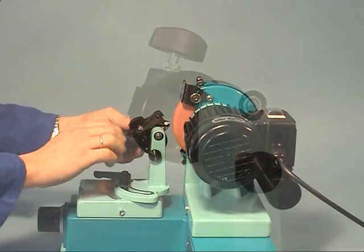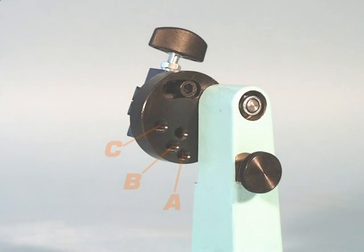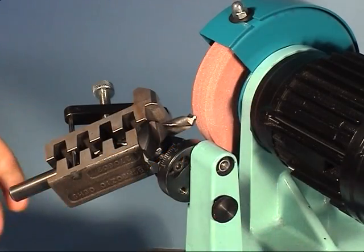For the back or clearance facet, the pivoting mechanism is locked in position B. The grinding is done according to the first two edges.